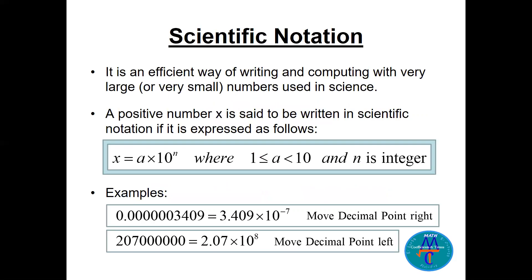Let's see what scientific notation is. Scientific notation is a simple, efficient, and easy way to write and compute very small numbers or very large numbers. We have a positive number x written as a times 10 to the power n, where a is between 1 (closed) and 10 (open) — so a can be 1, 1.5, 1.6, up to 9.99, but cannot be 10. And n is an integer, which can be positive or negative.